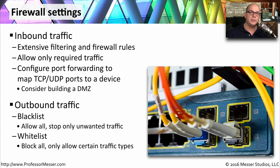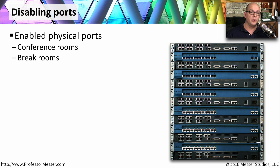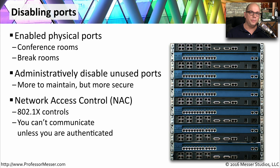For outbound traffic, there are a couple of different philosophies. One is that you allow all traffic but stop unwanted traffic using a blacklist. The other is to reverse that — nothing is allowed out, and you only allow access to certain locations using a whitelist. In most SOHOs, it's a good best practice to disable any interfaces on a switch or router that you don't plan on using. This makes it very secure so that nobody can walk in, plug into an available port, and gain access to your network. In larger environments, we use Network Access Control, or NAC — the 802.1x protocol, which requires people to authenticate before they can communicate on the network.